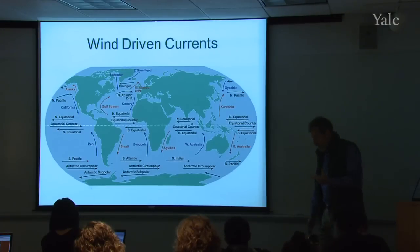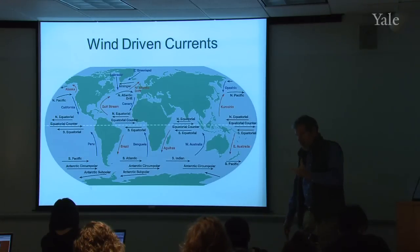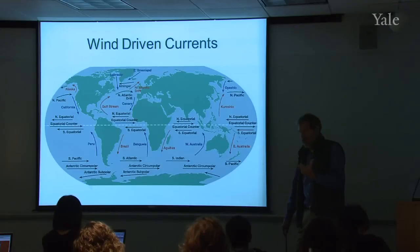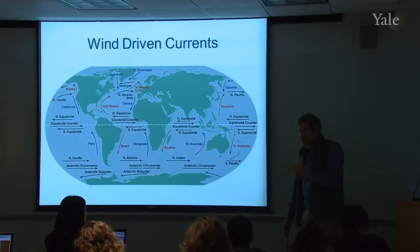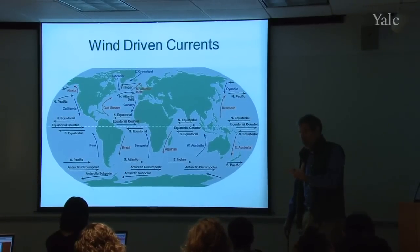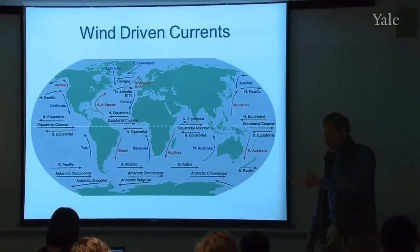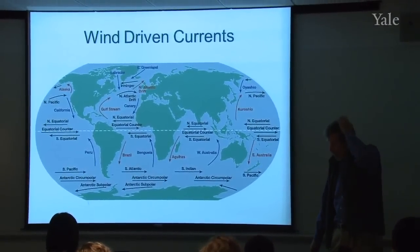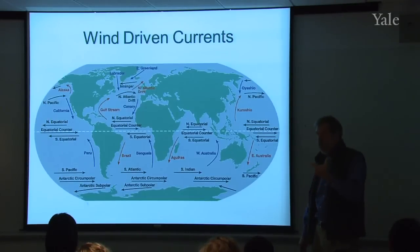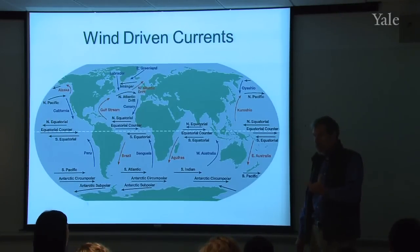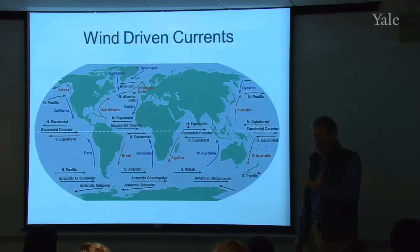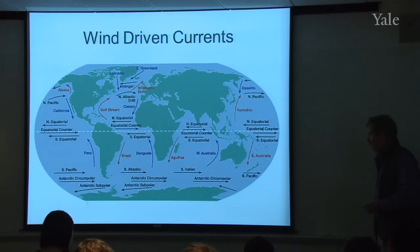When I say they're geostrophically balanced, I mean there's a balance between pressure gradient force and Coriolis force. Where does wind appear in that? Wind was important in setting up the pressure gradient force, so wind is still in there even though it doesn't appear directly in that force balance.